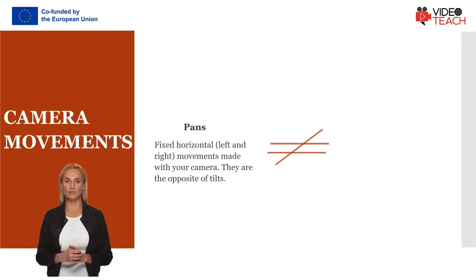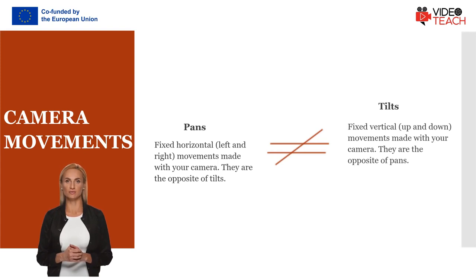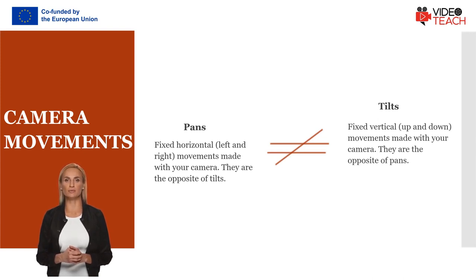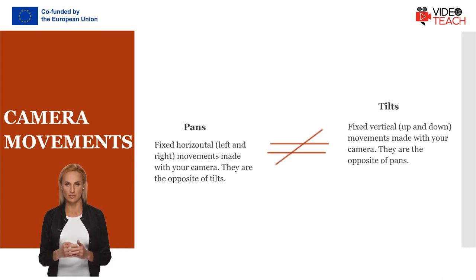Pans are the opposite of tilts. Tilting is a technique in which the camera stays in a fixed position but rotates up or down in a vertical plane. Therefore, tilts are fixed vertical, up and down, movements made with your camera.